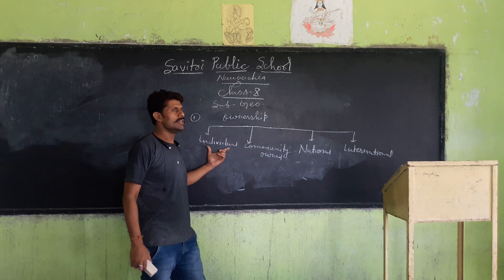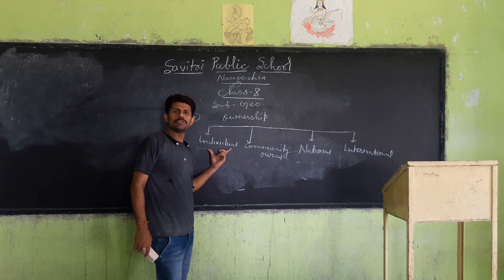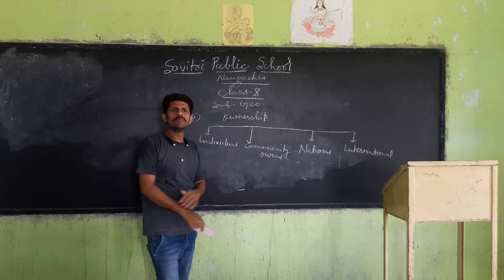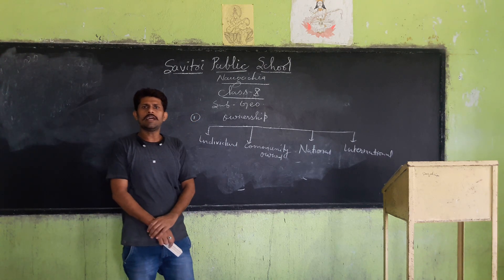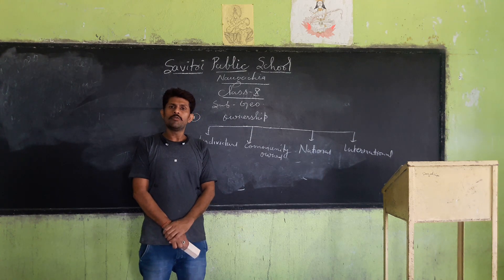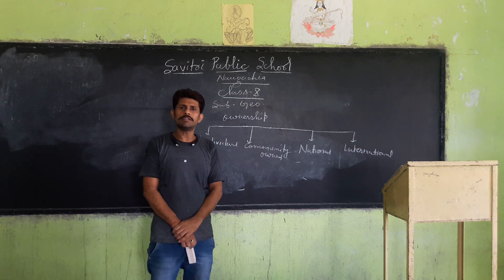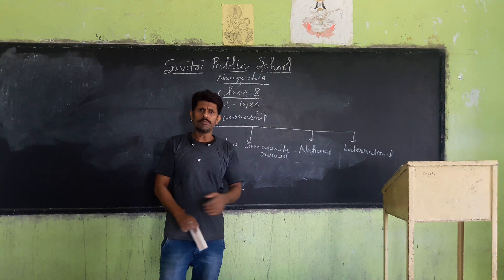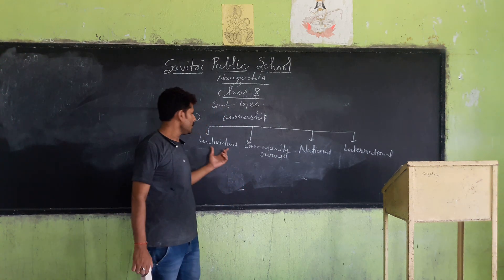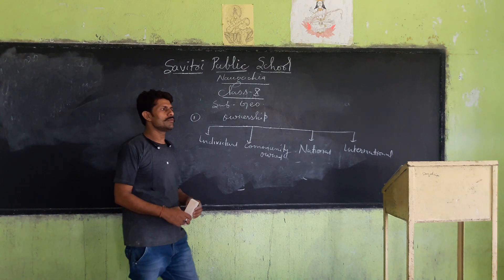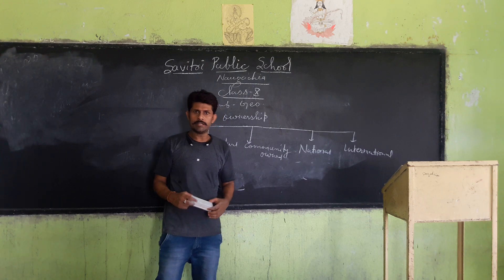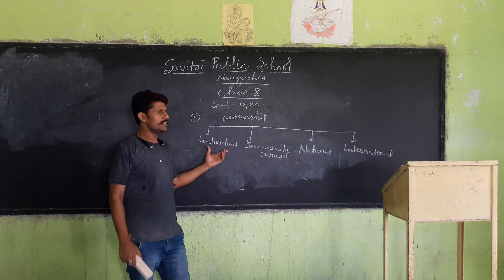Individual resources are those resources which are owned by an individual or a group of people. For example, agricultural land owned by a farmer. These lands are given to individuals on payment of taxes to the government. That is why these are called individual resources.